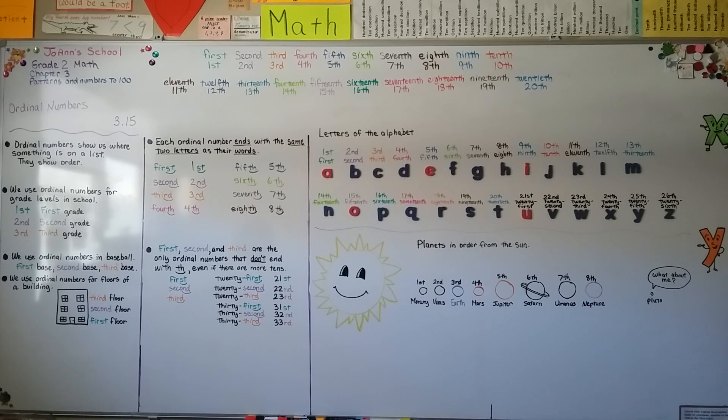We can even use ordinal numbers for the order that we were born. If you have brothers and sisters, were you the first one? Second one? Third one born?